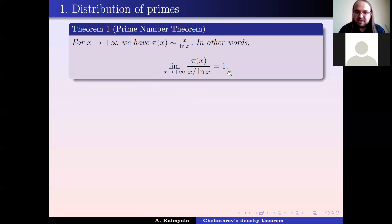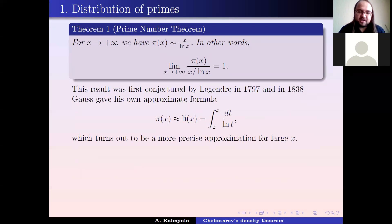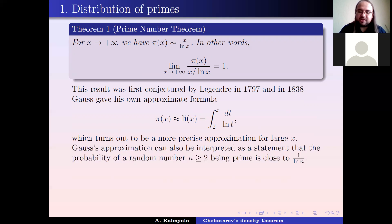This result was first conjectured by Legendre in 1797, and 40 years later Gauss gave his own approximate formula for π(x): the integral logarithm Li(x), which is the integral from 2 to x of dt over log t. It turns out this approximation is far more accurate than just x / log x. This can also be interpreted as saying that the probability of a random number n ≥ 2 being prime is approximately 1 / log n.